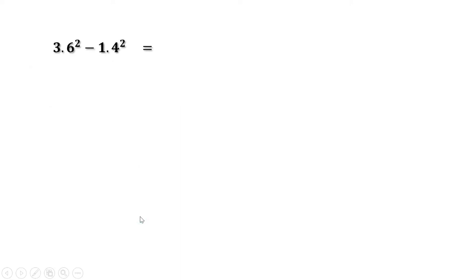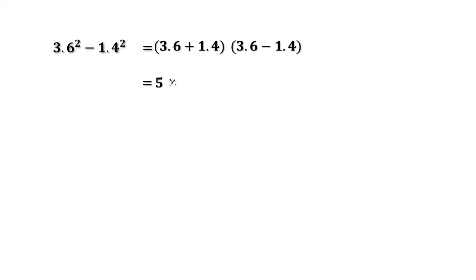Third part: 3.6² - 1.4². This can be written as (3.6 + 1.4)(3.6 - 1.4). 3.6 + 1.4 is 5 and 3.6 - 1.4 is 2.2. So this equals 5 into 2.2, and multiplying we get 11. That means 3.6² - 1.4² = 11.